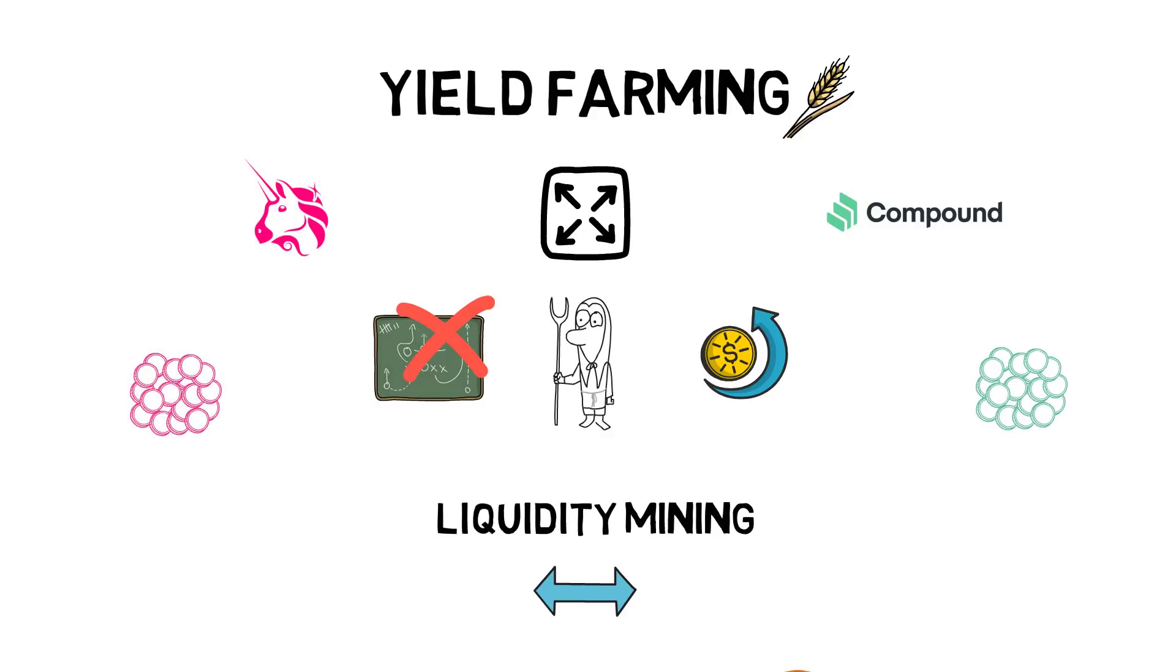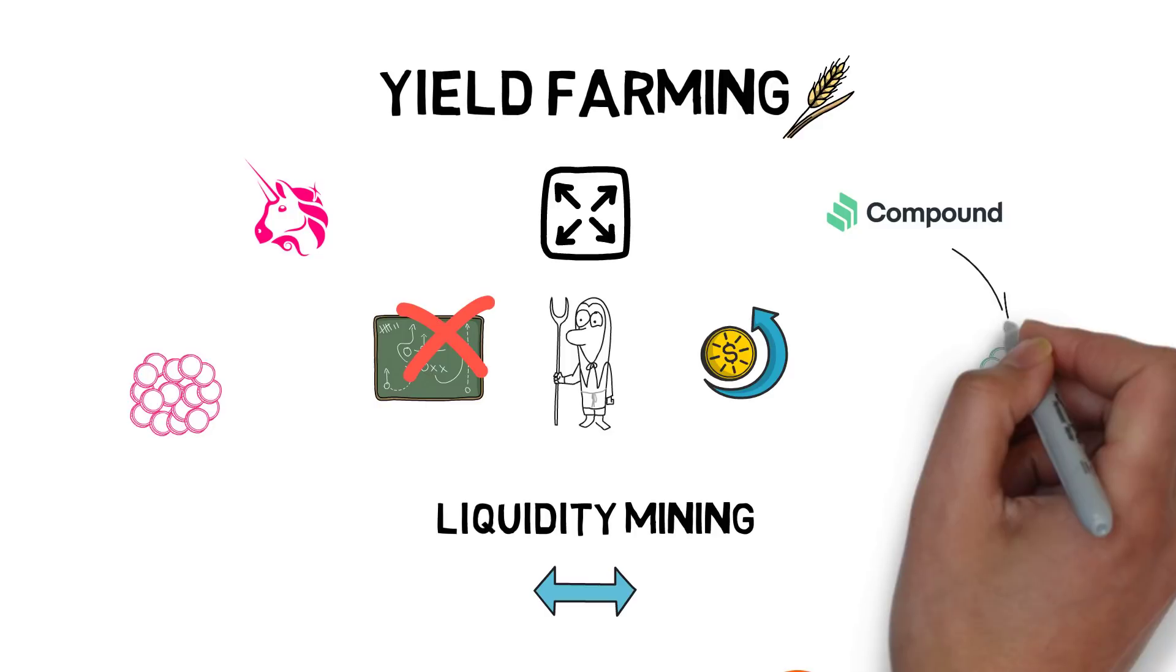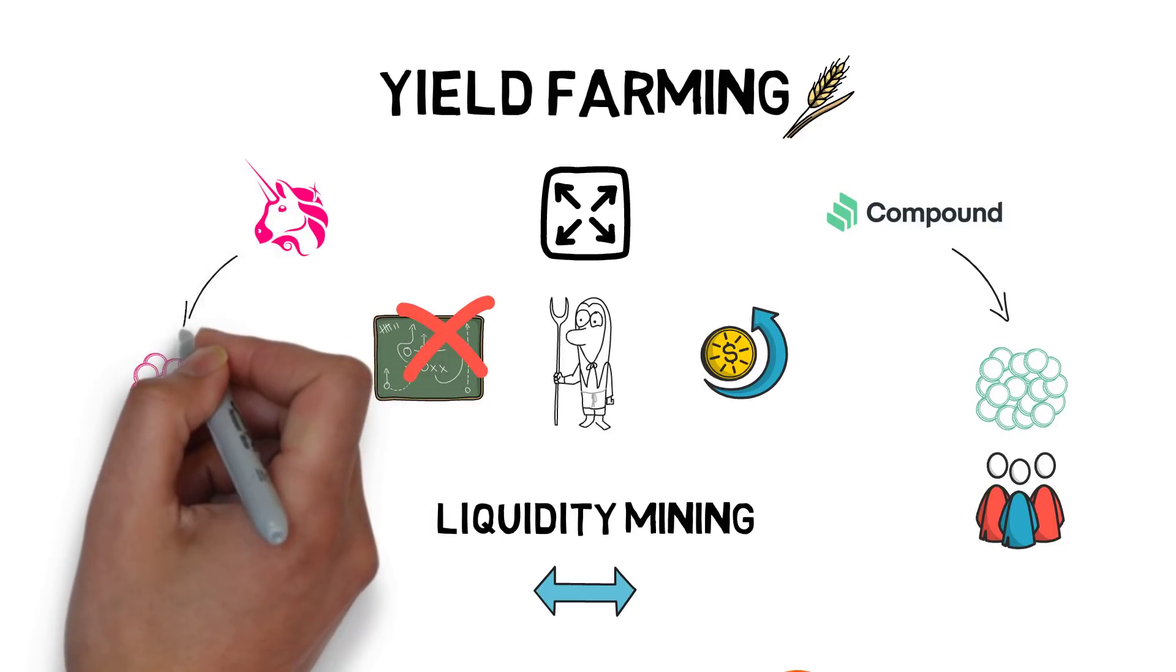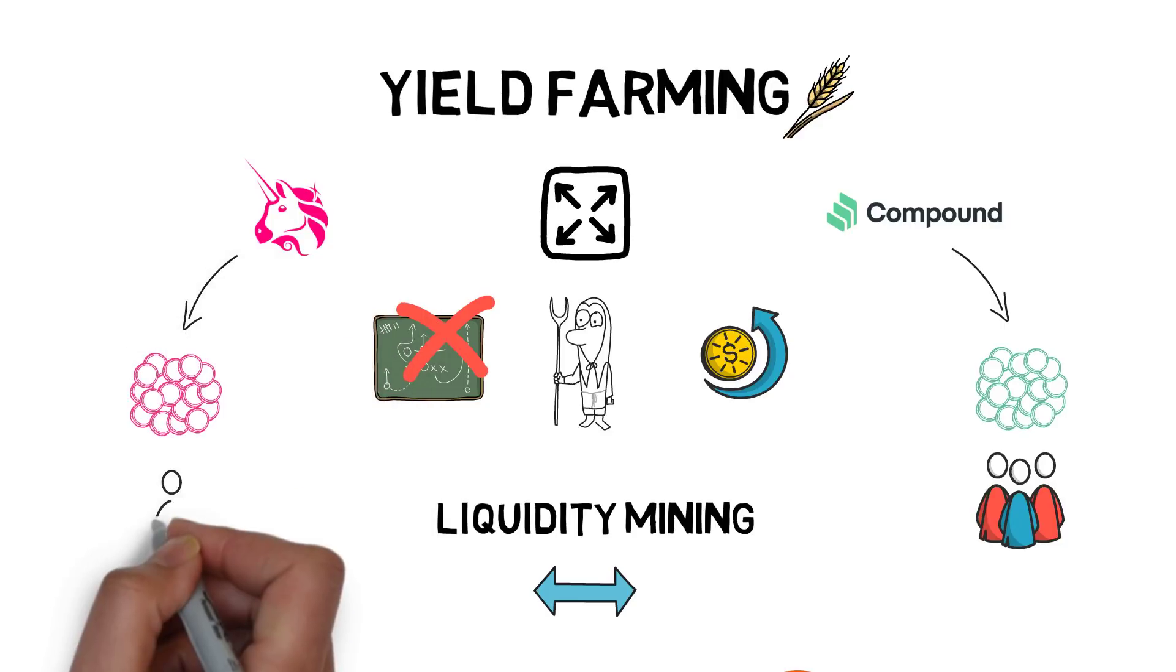For example, Compound distributing COMP tokens to lenders and borrowers on their platform, or Uniswap distributing UNI tokens to their liquidity providers. If you haven't watched it yet, I would recommend watching my other video on yield farming to understand these concepts even better.